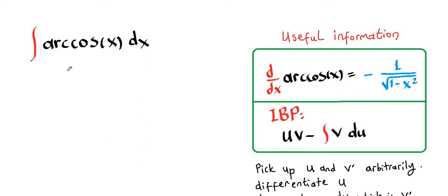We're going to rewrite arccos of x as a product of two functions so we can utilize integration by parts. In our case we're going to use one times arccos of x. Now we have two functions, one and arccos of x.